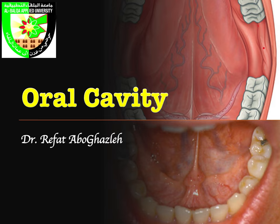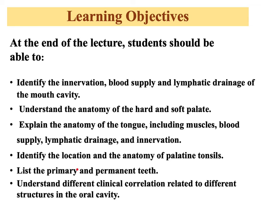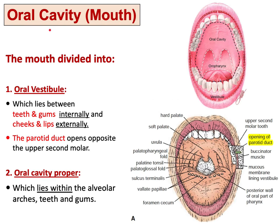Welcome back everyone to the first anatomy lecture in the GI system. Today we'll talk about the oral cavity. The oral cavity and the mouth are the same thing. The mouth is divided into two spaces or two parts.